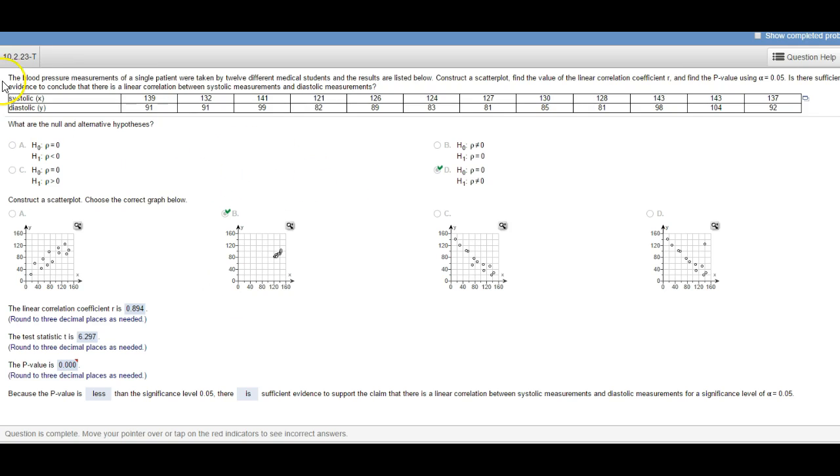Hey stats class, this is another question from our 10.2 homework. In this question we are doing a hypothesis test for correlation and we are trying to determine if there is a strong enough correlation between these two data sets, systolic and diastolic blood pressures.